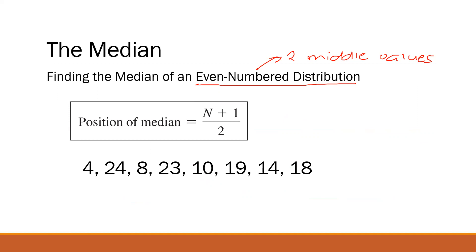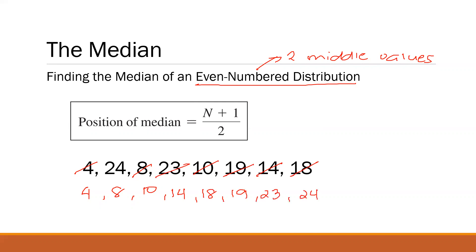Let's try with this given. Remember, you have to arrange the numbers from least to greatest. Starting with the smallest: 4, 8, 10, 14, 18, 19, 23, 24. We have 8 numbers here. To compute the position of the median: 8 plus 1 divided by 2, which is 9 divided by 2 — the position of the median is 4.5.